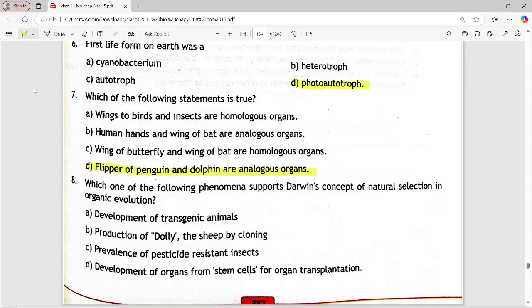Next is, which one of the following phenomena supports Darwin's concept of natural selection in organic evolution? Options are, development of transgenic animal, production of dolly, the sheep by cloning, prevalence of pesticide-resistant insects, or made of organs from stem cells for organ transplantation. Answer is option C, prevalence of pesticide-resistant insects.